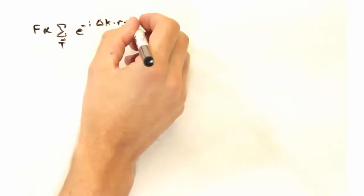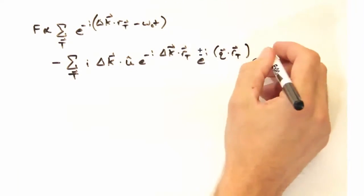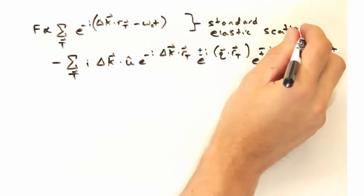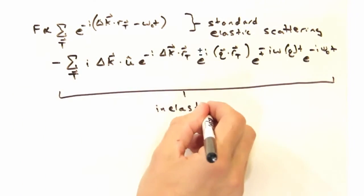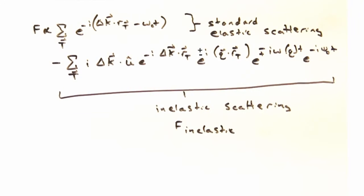Plugging all of this back in, we get this lovely expression here, which is composed of two parts. First, this summation here that should look pretty familiar. That's going to be the standard elastic scattering expression. Then we have this nice second part here, which is the inelastic part. And that's really what we're focusing on today.